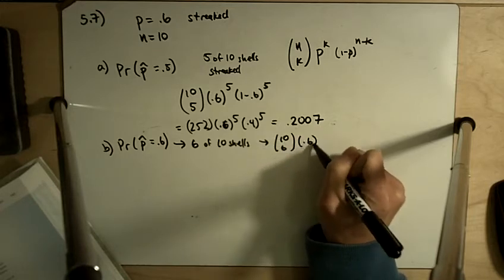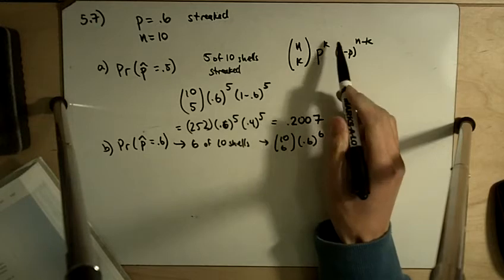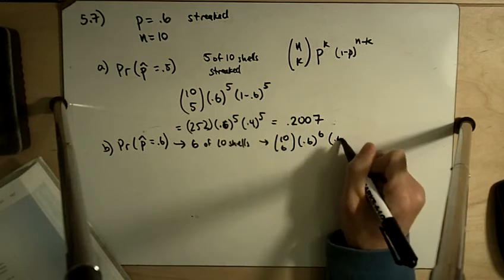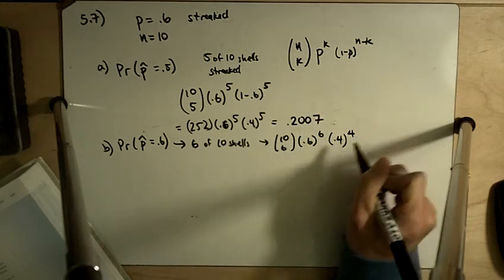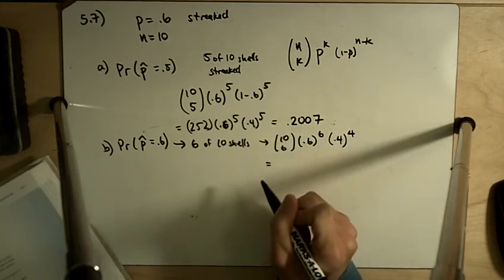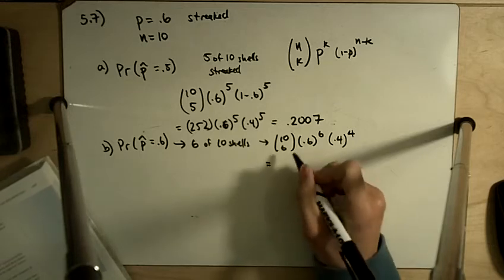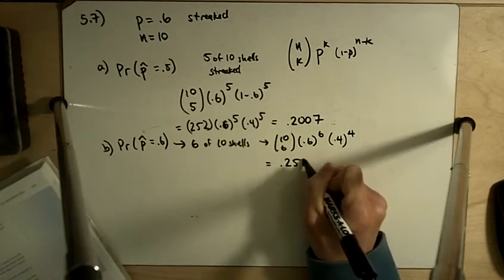So we have 10 choose 6, 0.6 to the 6, P to the k, times 0.4 to the n minus k, which is 10 minus 6 is 4. And when you crunch that out, you get 0.2508.